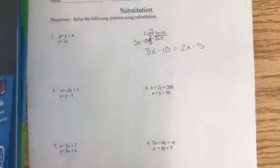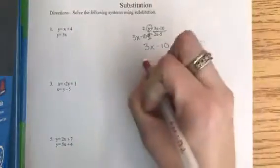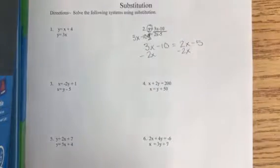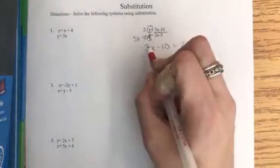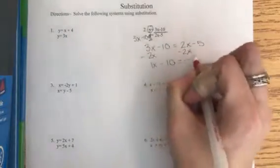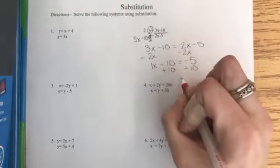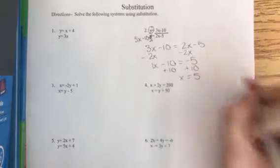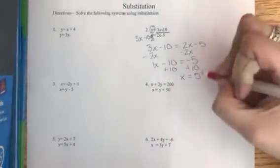Equals 2x minus 5. Okay, this is something I can now solve. My variables are on opposite sides so I'm going to get them together with the opposite sign. So 3x minus 2x is 1x. I'll just continue solving.